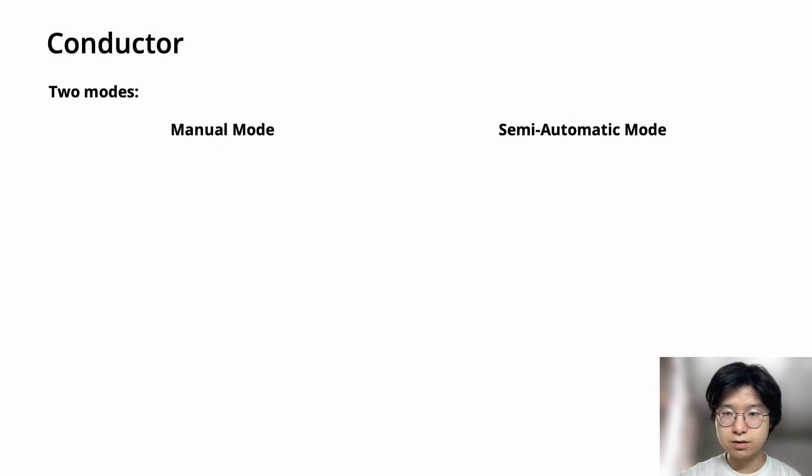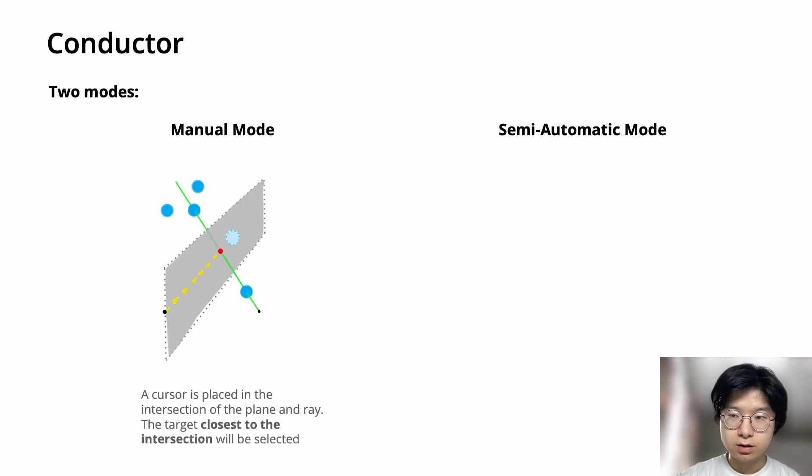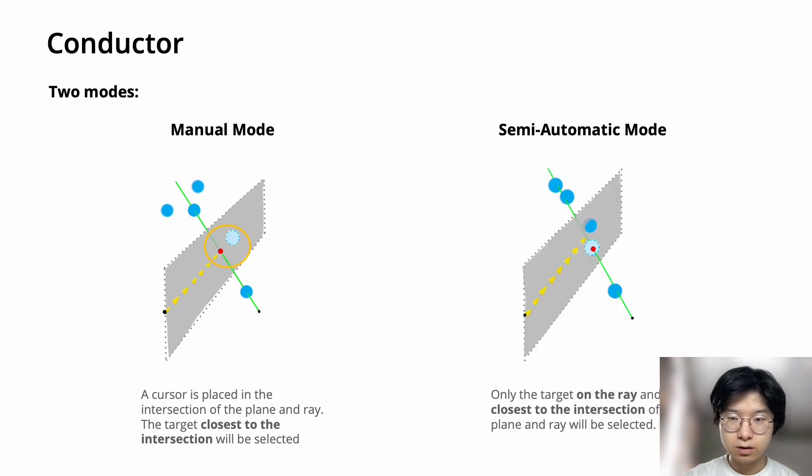Conductor also has two modes: a manual mode and a semi-automatic mode. For manual mode, a cursor is placed at the intersection of the plane and ray, and the target closest to the intersection will be selected. For semi-automatic mode, only the target on the ray and closest to the intersection of the plane and ray will be selected.